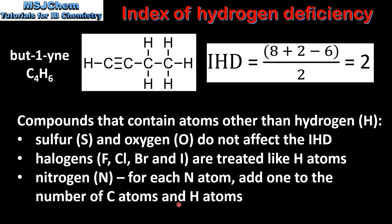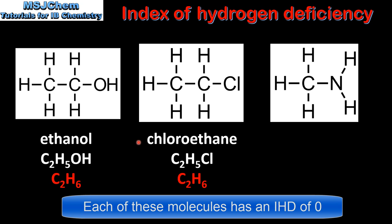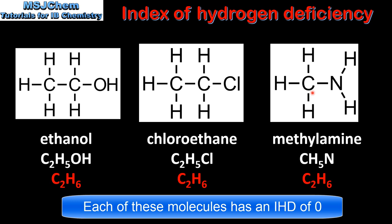So here we have ethanol, which has an oxygen atom. The oxygen atom does not affect the index of hydrogen deficiency, therefore we'd calculate it as we would for C2H6. Next we look at chloroethane, which has a chlorine atom in the molecule. The chlorine atom is treated like a hydrogen atom, so we'd use the formula C2H6 to calculate the IHD. And finally methylamine, which has an amine group bonded to a carbon atom. Its molecular formula is CH5N, so because we have one nitrogen atom we add 1 to the number of carbon atoms and 1 to the number of hydrogen atoms, which gives us C2H6.